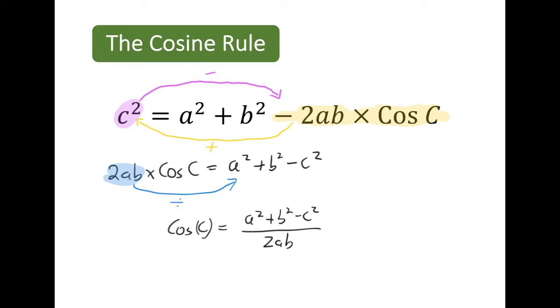On your formula sheet, you will be provided with the standard cosine rule formula, which is the one we started with. You will need to know how to rearrange it to be able to find a missing angle.